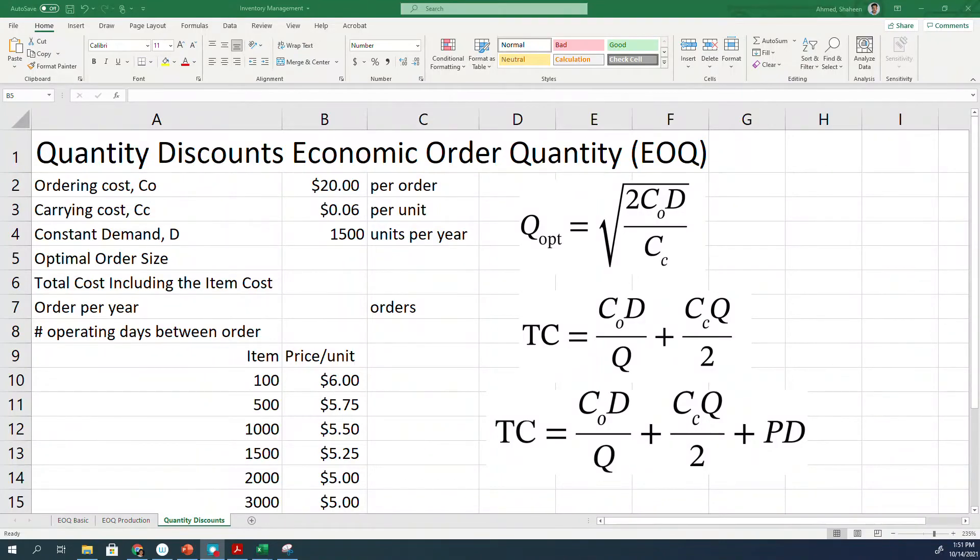Economic order quantity for discounted items. How much should you order when you get a discount for ordering a large volume or large size, and the discounted prices are provided?